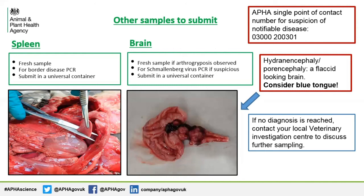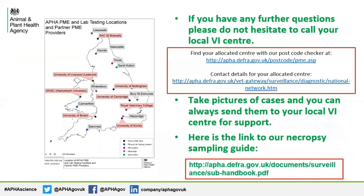If at this stage no diagnosis is reached, please contact your local VI centre to discuss further sampling. If you have any further questions, please do not hesitate to call your local VI centre — the link to your local allocated centre can be found on this slide. You can also take pictures of your necropsy exams and send them to the vets at your centre to help you further. We also have a necropsy sampling guide online to help you decide which samples to take from any on-farm post-mortems — please see the link.